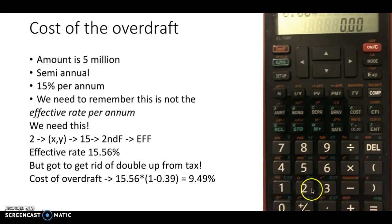So there's two periods per annum for a semi-annual, so we put in 2 into xy, then we put 15 because that's the percentage interest rate in, and then we put second function, and then there's the EFF button, and that will give us our effective rate of 15.56%. But remember, that's a double up because we've got that tax incentive there because we don't pay tax on the cost of business, so we have to remove that. So 15.56 times one minus 0.39, which gives us an effective rate of 9.49% as the cost of the overdraft.